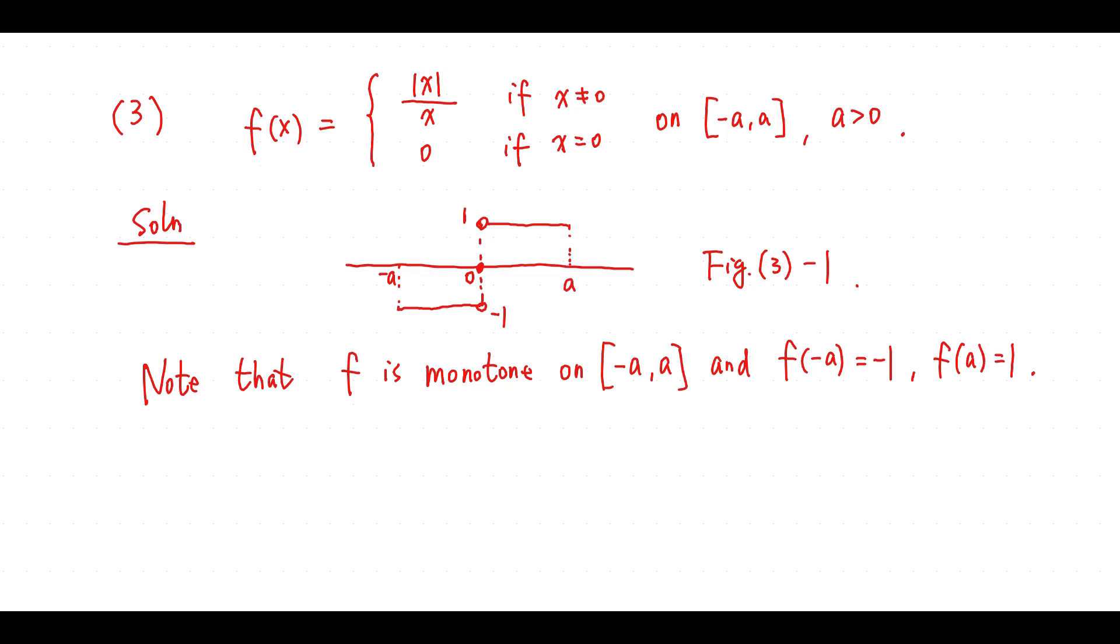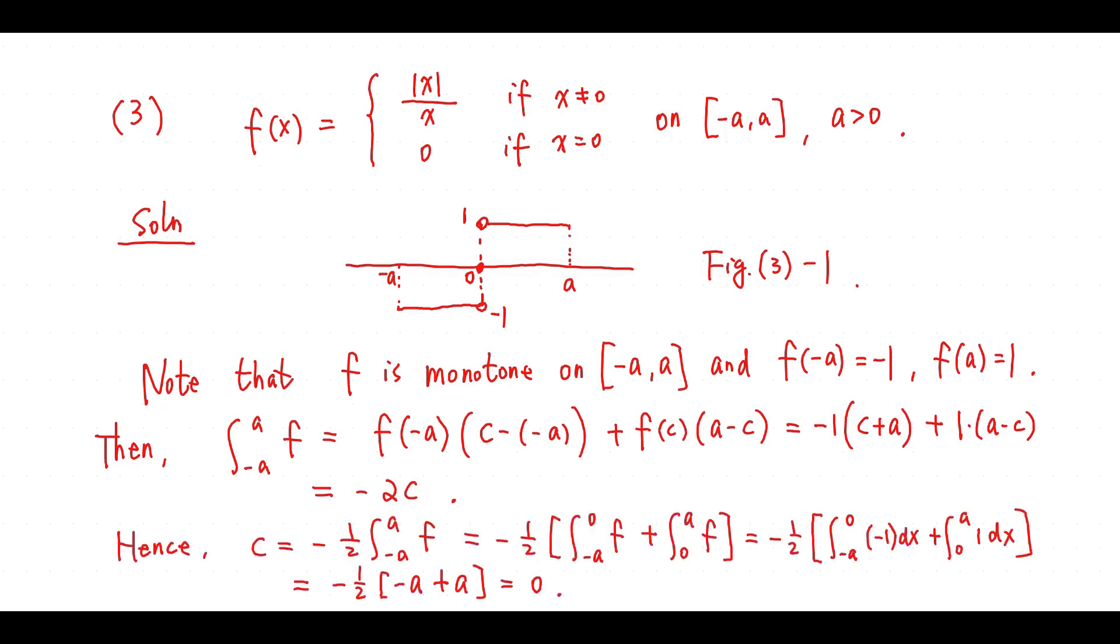f(a) = 1. Then the second mean value theorem gives the required equation for some c in [-a, a]. Therefore, we obtain c equals zero.